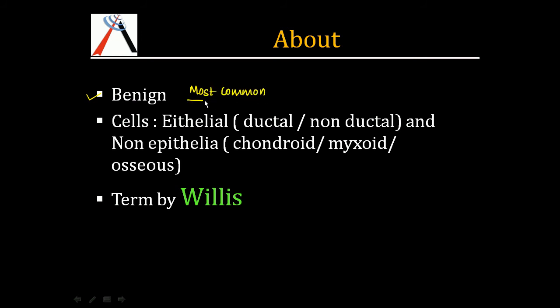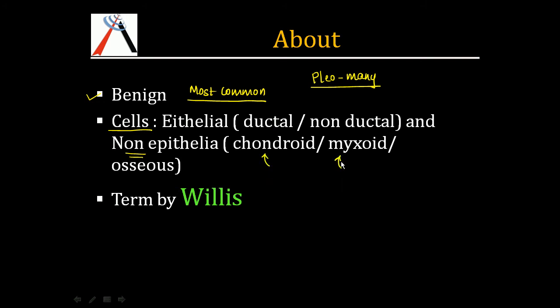The name 'pleomorphic' comes from 'pleo' meaning many. It has various types of tissue components: epithelial cells, which could be ductal or non-ductal cells, and non-epithelial tissue including chondroid, myxoid, and osseous tissue.